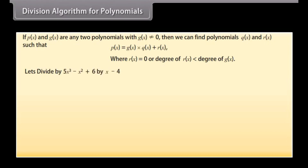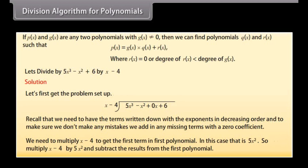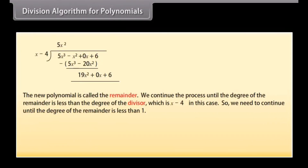Let's divide 5x cubed minus x squared plus 6 by x minus 4. Recall that we need terms written with exponents in decreasing order, and we add in any missing terms with a 0 coefficient. We need to multiply x minus 4 to get the first term of the dividend, which is 5x squared. So we multiply x minus 4 by 5x squared and subtract the results. We continue this process until the degree of the remainder is less than the degree of the divisor, x minus 4, which means less than degree 1.